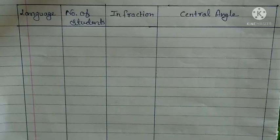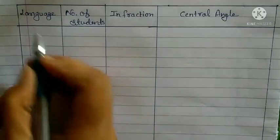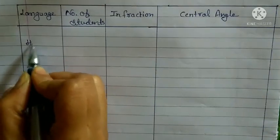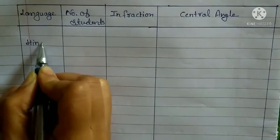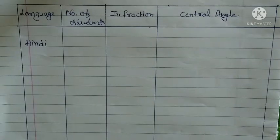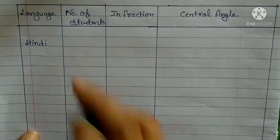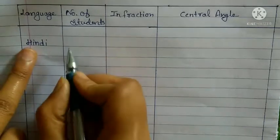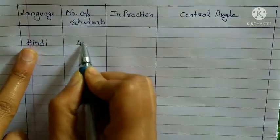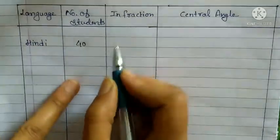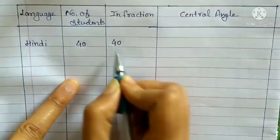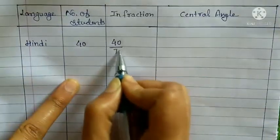Language is given. Hindi. The total number of students are 72. In Hindi, how many students are there? 40. So what is the fraction? 40 upon 72.